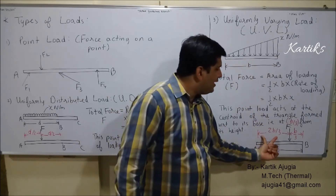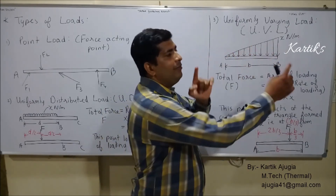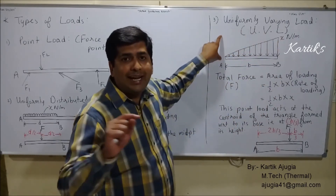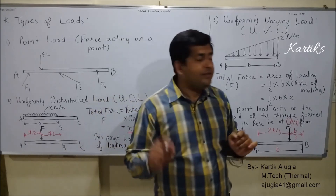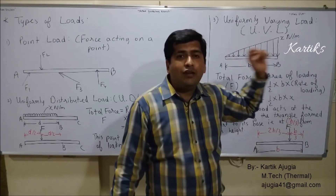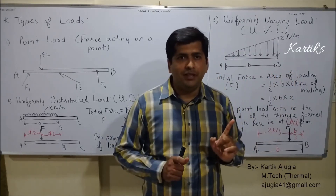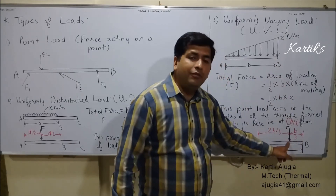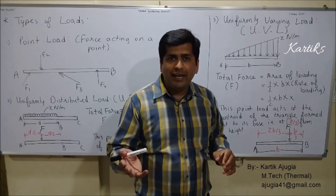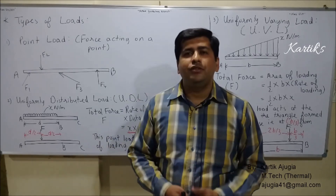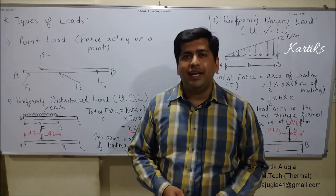The point load from UVL acts at the centroid of the triangle — at B/3 from the height of the triangle. In this case the height is at point B, so it acts at B/3 from B, or equivalently 2B/3 from A. Remember: the centroid is always measured from where the height is located. If the loading were flipped and the height were on the other side, it would act at B/3 from that end. So the magnitude is the area of the triangle, acting at B/3 from the height.